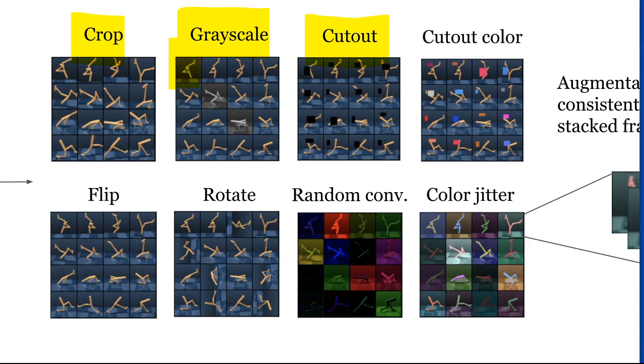Cutout means that there's a little patch missing. Cutout color is the same, but in a random color. Flip means you flip the image horizontally or vertically according to a random probability. Rotate is the same, but you rotate it instead of flip.